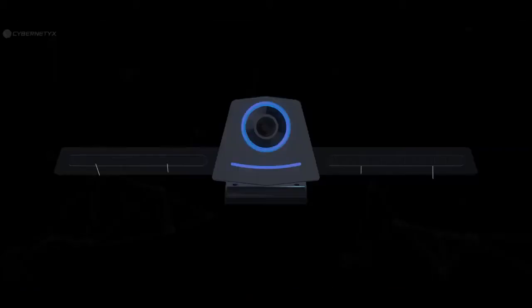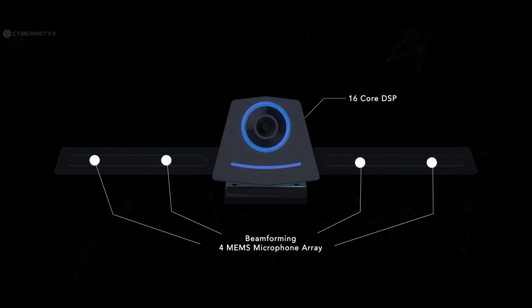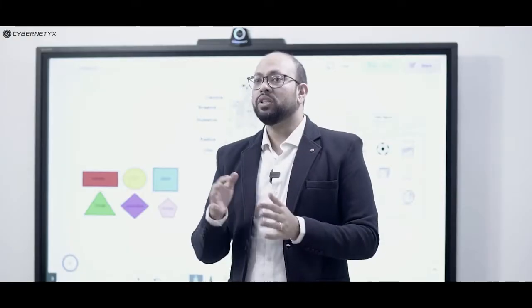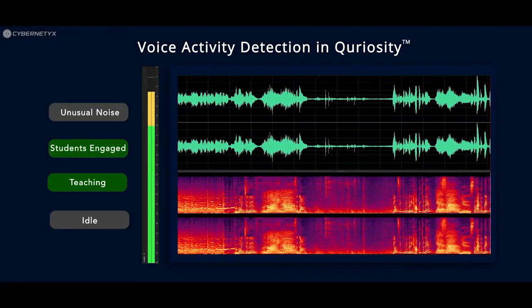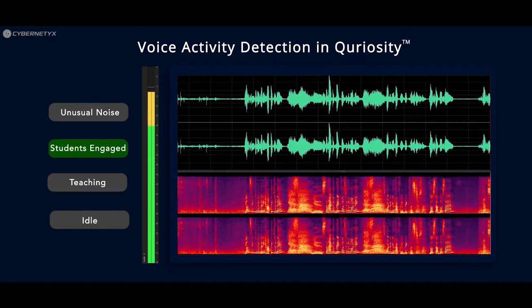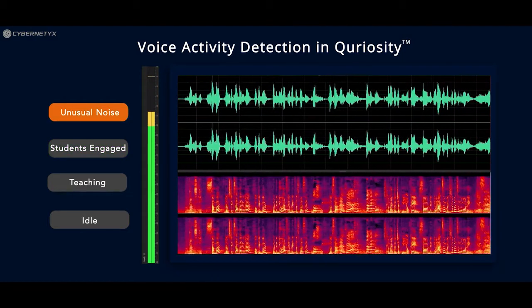The ClassEQ camera also has a beamforming mic array with four MEMS microphone and a 16-core digital signal processor that uses AI to perform voice activity detection and direction of arrival. What this means is when someone is speaking in the classroom, the mic can actually focus on the speaker and suppress the surrounding noise. These microphones can also be used to detect unusual noise levels in the classroom.